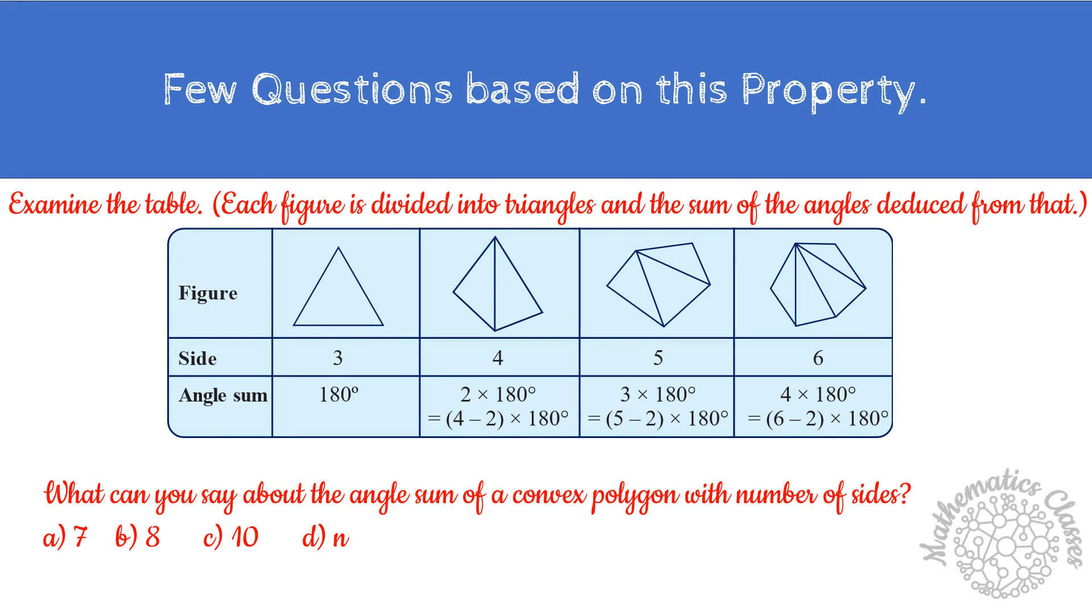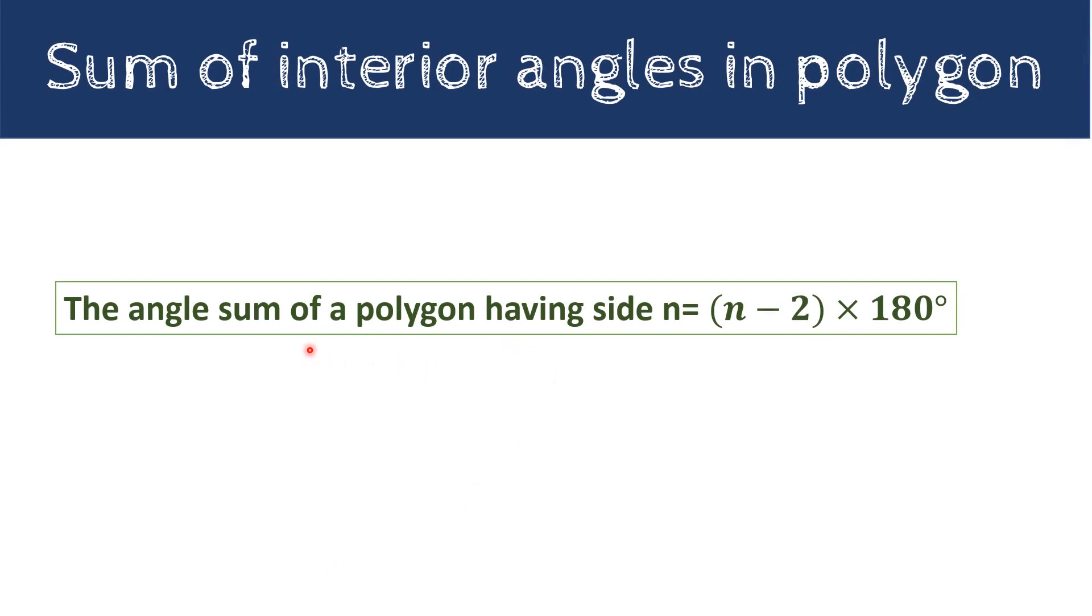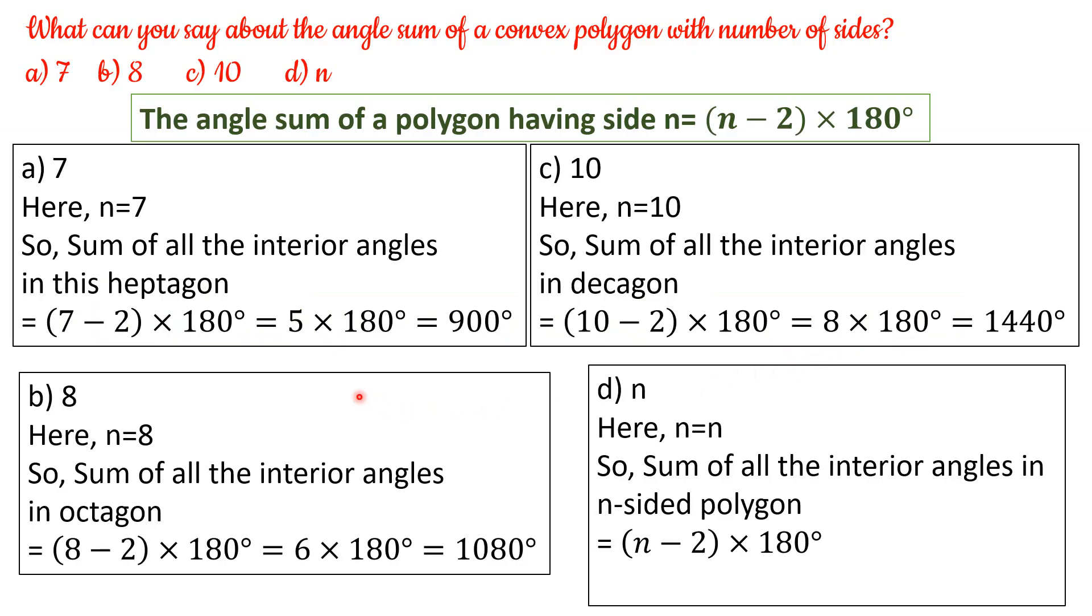Now, we can take few questions based on the angle sum property of polygon. Here, in the table, we have been given figure of different sides with its sum of interior angles. And, we have to find out the angle sum of different sided convex polygon. One more thing, it does not matter whether it is a convex or concave polygon. We get our answer as below.